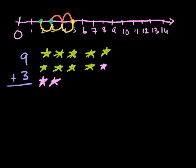And then if you were to count the total number of stars, you would say 1, 2, 3, 4, 5, 6, 7, 8, 9, 10, 11, 12. I now have 12 stars. So you'd say that 9 plus 3 is equal to 12.